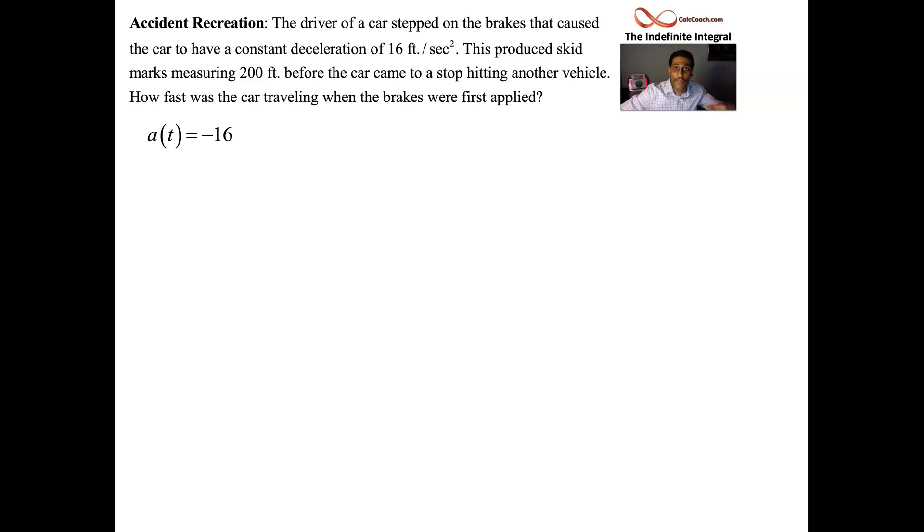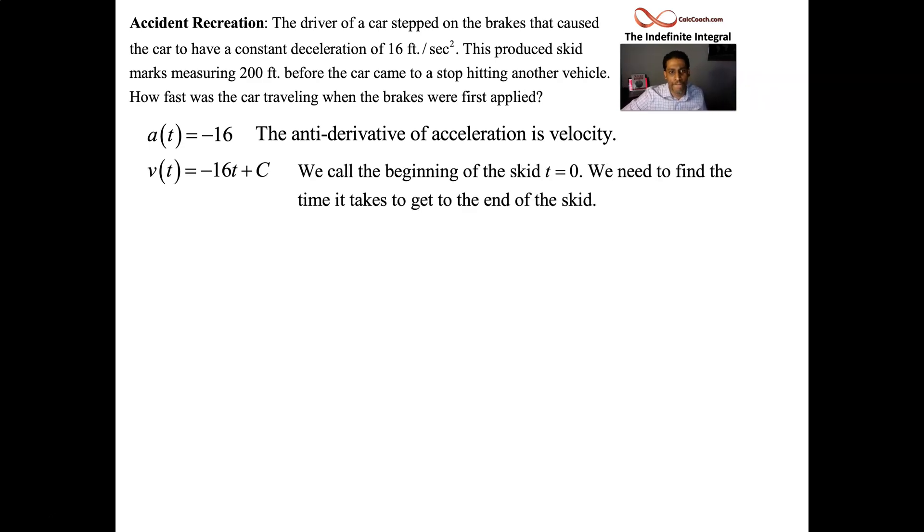If we find the antiderivative, we'll have the velocity function. And we know how to take the antiderivative of a constant. We throw a variable on it. In this case, the variable would be t, not x, plus a C. Okay. Now, let's set the framework that when the skid began, time t equals zero. Our job is to find the time it takes to get to the end of the skid.